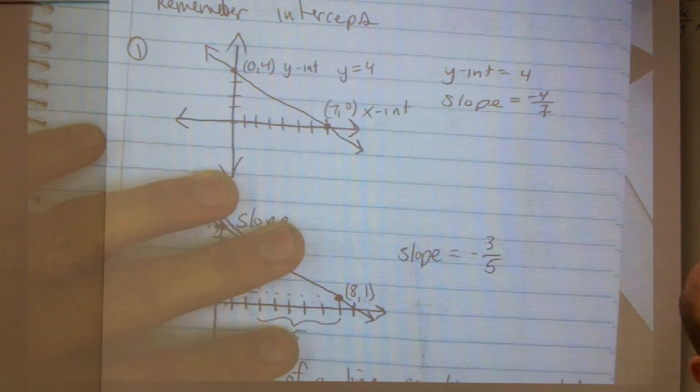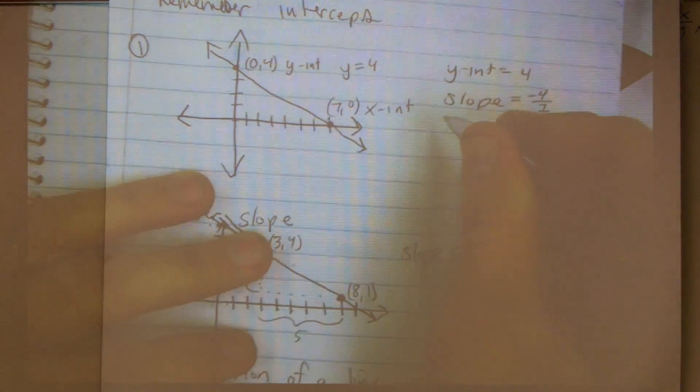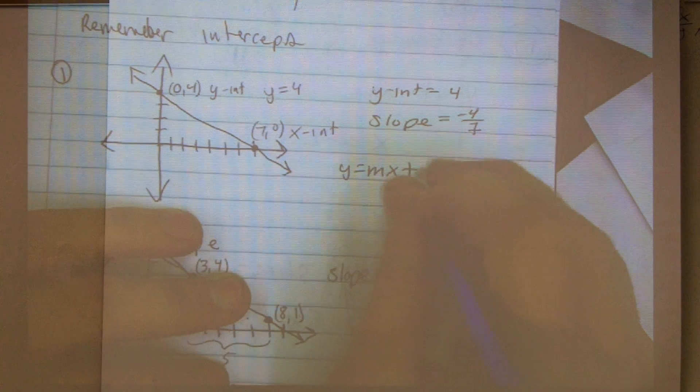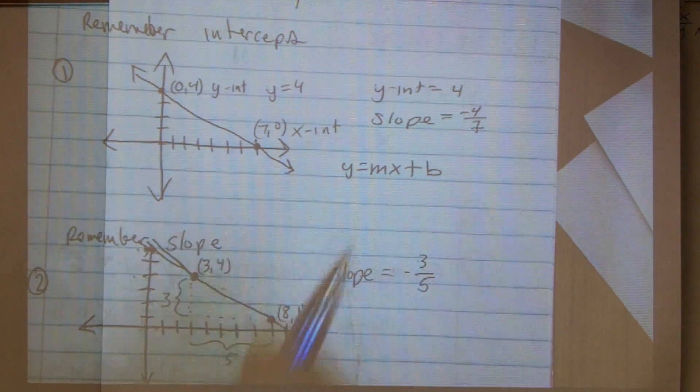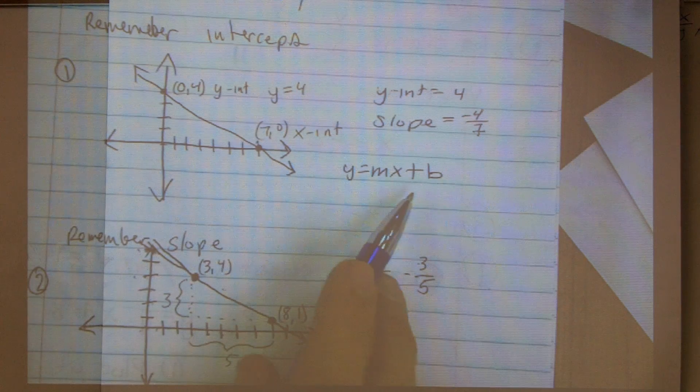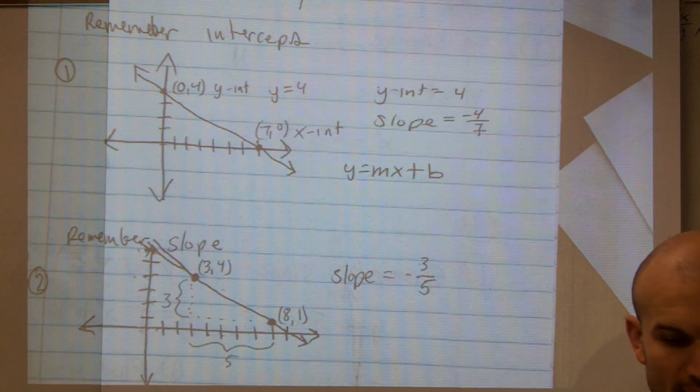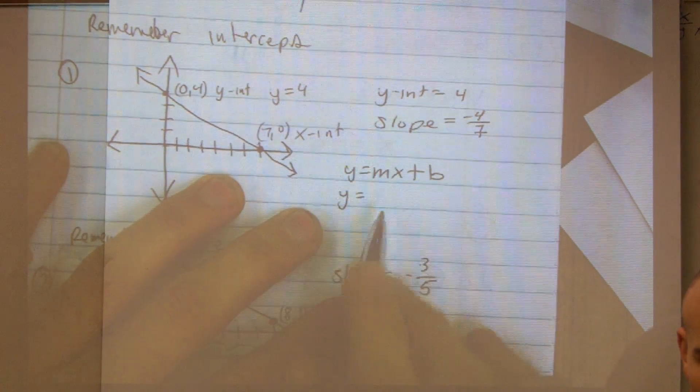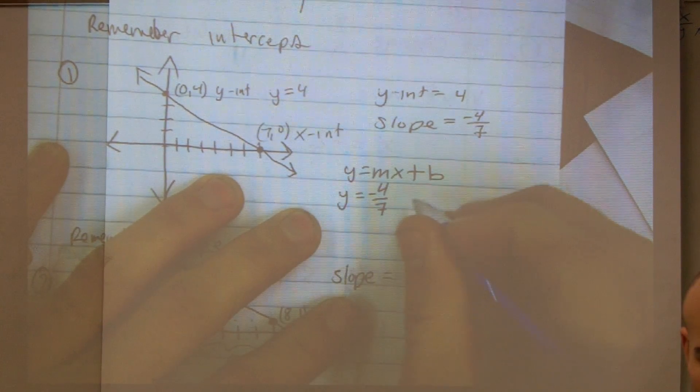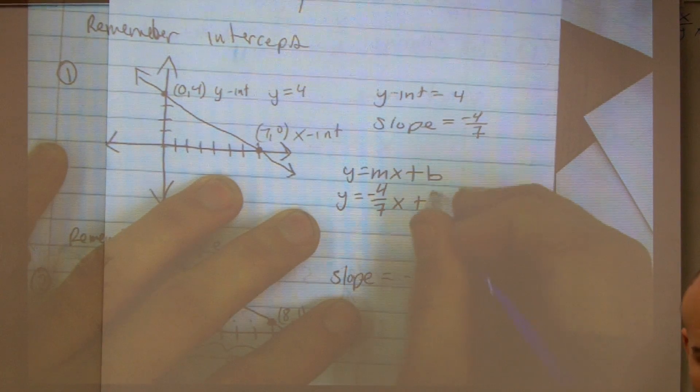Remember that your slope is a ratio. To put it in y equals mx plus b form, remember that m represents your slope and b represents your y-intercept. If I want to write this as an equation for the slope of a line, I'm going to keep my y, but instead of m, I'm going to write in what my slope is, which is negative 4 over 7x, plus my y-intercept, which is 4.